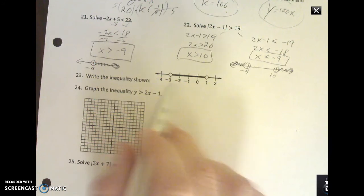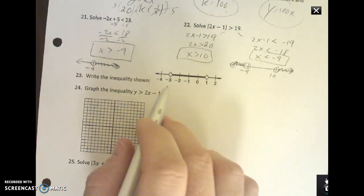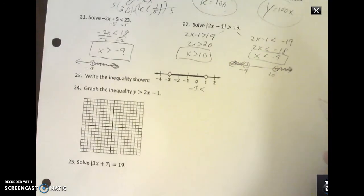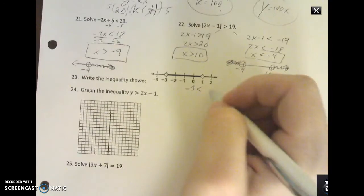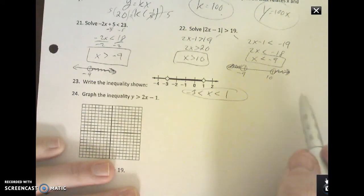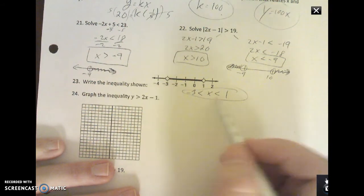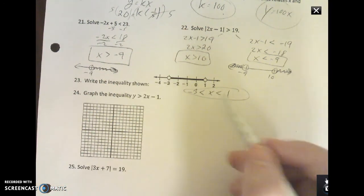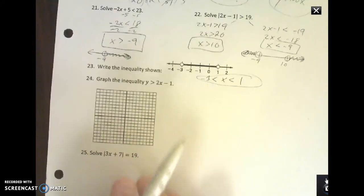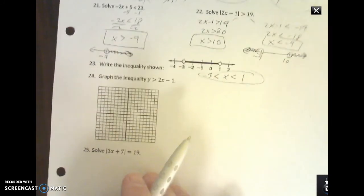They split in both directions. The only other type is the and problem, and that's when they meet in the middle. For inequalities, if it's greater than, it's or; less than is and, however you want to remember that. Write the inequality shown. This is an example of the and one. Starting at negative 3, open circle, so less than x, which is less than 1. See how x is contained between these two boundaries? So if I'm writing that as an inequality, it's just your first starting point, your second starting point, and you're done.